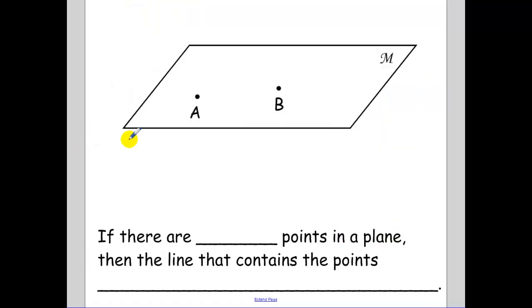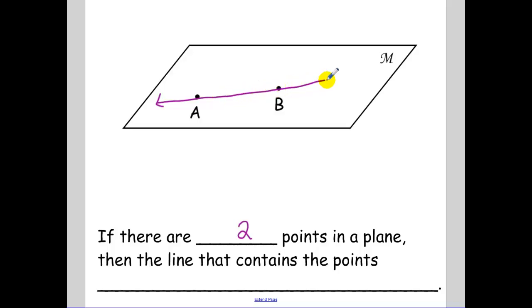Now, if there are two points in a plane, then the line that contains those points — since we know that two points make a line — that line is also in the plane. So the line that contains the points is also in the plane.